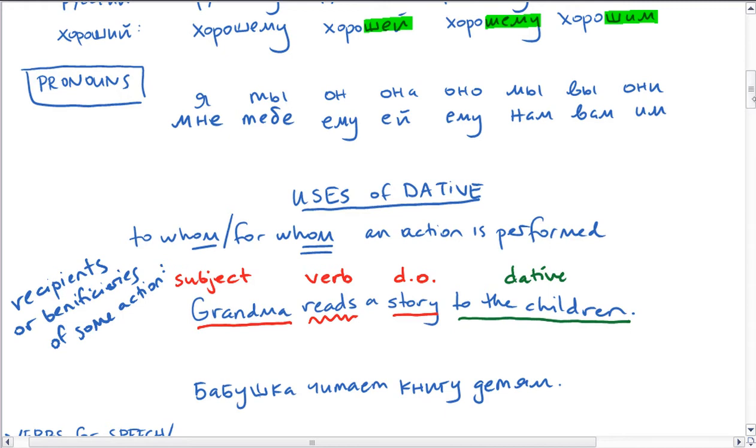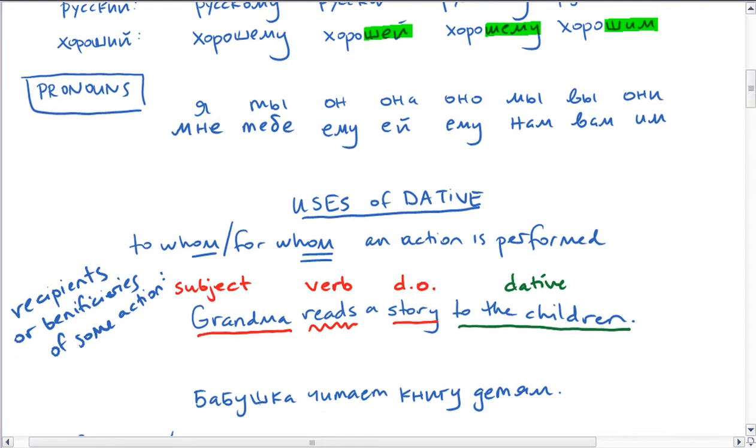And here comes our dative case: to the children. So the children are the recipients of this action of reading. So they're the people for whom this action is performed. So we use the dative case for recipients or beneficiaries of some action. If we look at that same sentence in Russian, our parts of speech are going to be the same, but instead of using word order, we're going to use case endings. So we've still got our grandma as the subject. Babushka читает книгу детям. Babushka is in the nominative case, so we know she's still the subject.